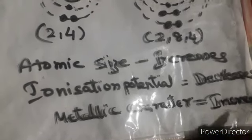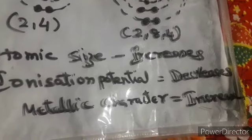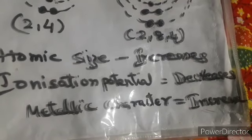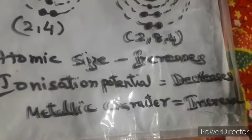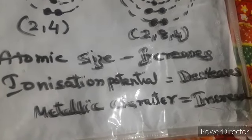The conclusion: when we move across a group from top to bottom, atomic size increases, ionization potential decreases, and metallic character also increases.